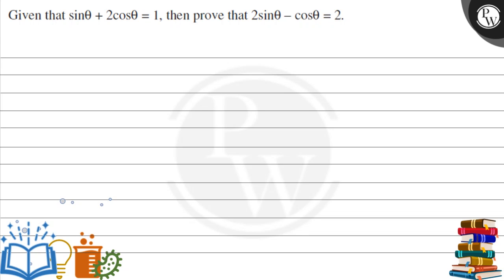Let's see this question. Given that sin θ + 2cos θ = 1, prove that 2sin θ - cos θ = 2.